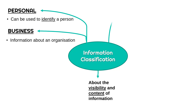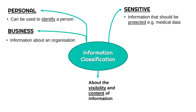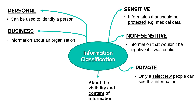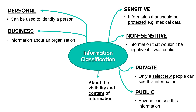Another two classifications that go together are sensitive and non-sensitive information. Sensitive information should be protected — medical data is an example, and a doctor would have to take care in how they store it. Non-sensitive information wouldn't cause harm to a person or business if released. Private information is where only a select few people can see it — for example, every teacher in a school might access certain private information. Public information is available for anyone to see, such as on a public website.